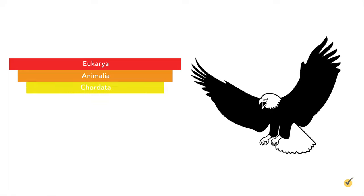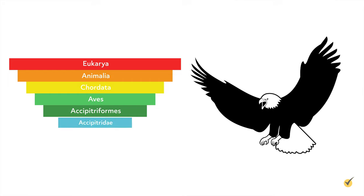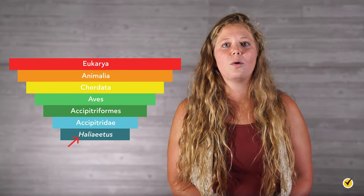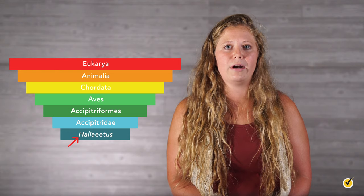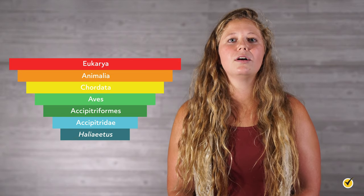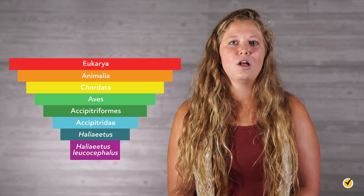For phylum, they are part of the chordata taxon because they're vertebrates that have a spinal cord. There are many subphyla that account for other features of their build and skeleton, but for simplicity's sake, we'll keep our scope to the bigger picture. For class, they are considered to be Aves. The order is Accipitriformes. The family is Accipitridae. The genus is the already-discussed Haliaeetus. Note that the first letter of the genus is always capitalized and the whole word is also italicized. And finally, at the species level, bald eagles are known as Haliaeetus leucocephalus.